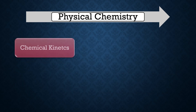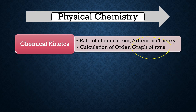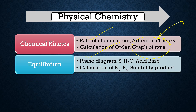Now comes physical chemistry. In chemical kinetics, you have to learn about graphs of different kinds of chemical reactions, rate of chemical reaction, the Arrhenius equation, and temperature dependence of chemical reactions. Calculation of order — first order, second order, zero order — is also available in the channel. For equilibrium, learn about phase diagrams, mostly the sulfur and water phase diagrams. Don't focus on organic compound phase diagrams, but the phase diagram of sulfur is most important.